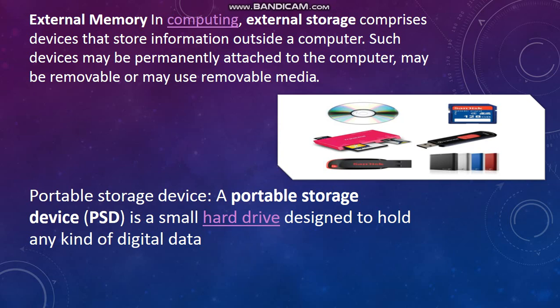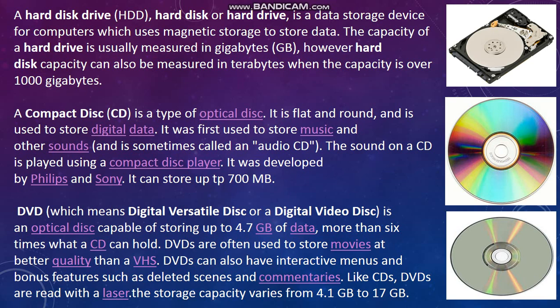Now we learn what is a portable storage device. A portable storage device is a small hard drive designed to hold any kind of digital data. The first portable storage device is a hard disk. A hard disk or hard drive is a data storage device for computers which uses magnetic storage to store data. The capacity of a hard drive is usually measured in gigabytes; however, hard disk capacity can also be measured in terabytes when the capacity is over 1000 gigabytes. Nowadays, hard disks start from 20 GB up to 1 TB or 4 TB. In desktops we normally use 500 GB, and in laptops we can see 1 TB, 2 TB, or 4 TB.